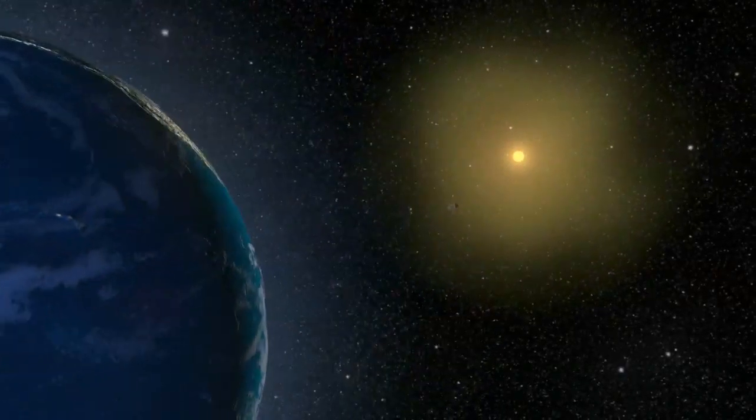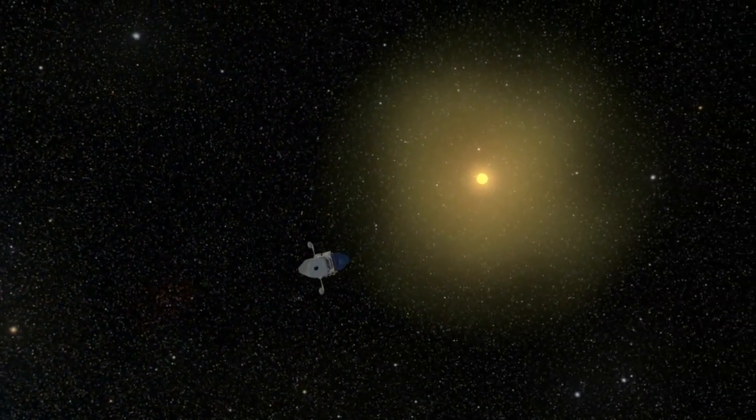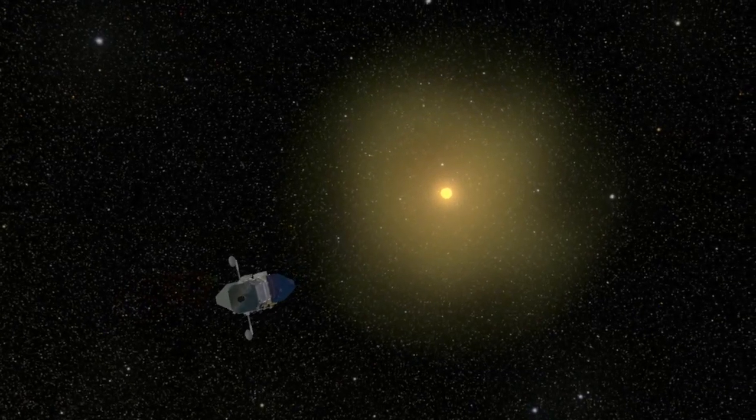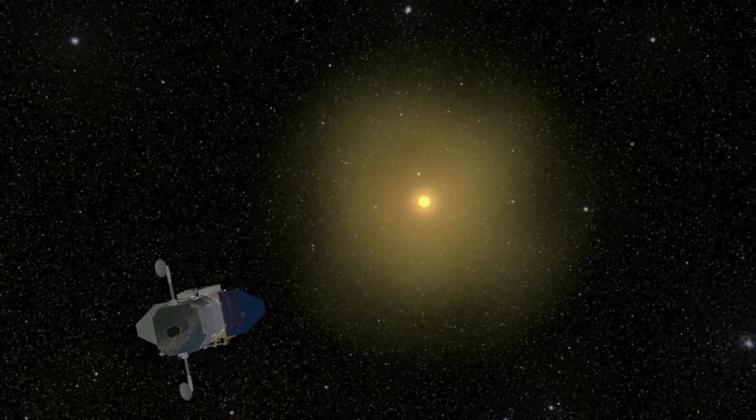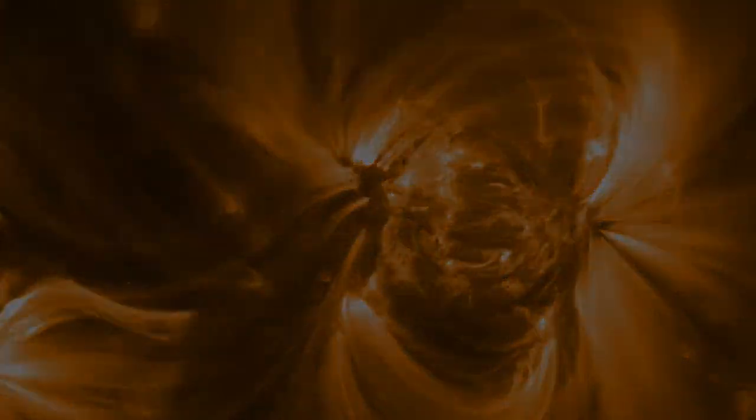The instruments on SDO are designed to work together. One measures magnetic field, one measures what the magnetic field does, and one measures what we see that affects us here at the Earth. SDO would like to be able to predict space weather so that we can look at the Sun, know something's going to happen, and call people up and let them know.